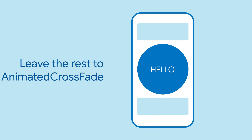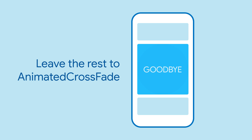Now, Animated Crossfade will show the correct widget depending on the state of your app — you don't need to worry about the intermediate states at all. If you, for example, change to the second widget and then go back to the first one before the animation ends, Animated Crossfade has you covered.